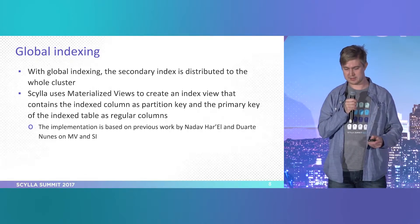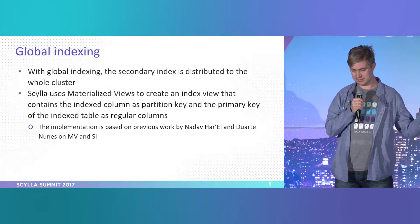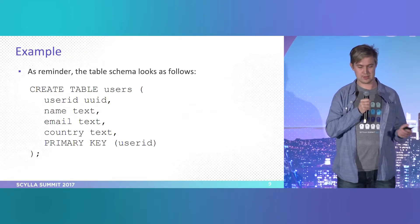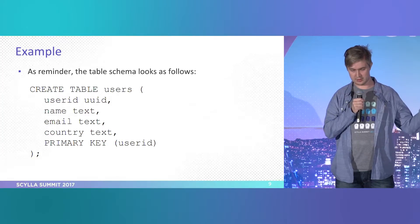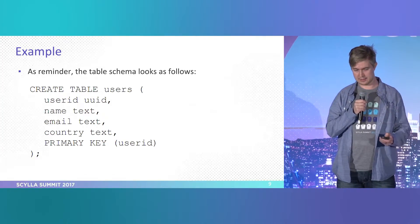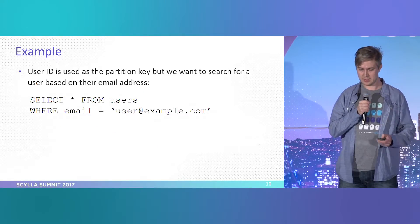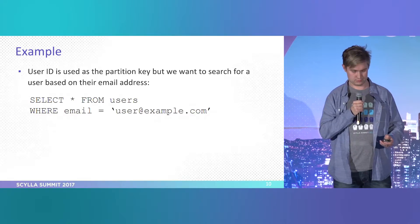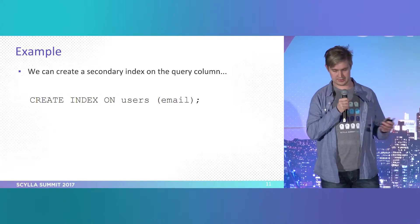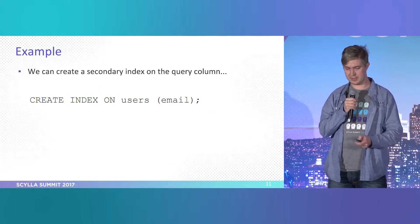The implementation in ScyllaDB is quite lightweight — the heavy lifting is done by the materialized view, worked on by Nadav and Duarte. The schema looks like this: you have the user table with user ID, and we're interested in searching by email. The first thing you do is create a secondary index on the query column — the syntax is exactly the same as Cassandra — so you create an index on the users table for the email column.